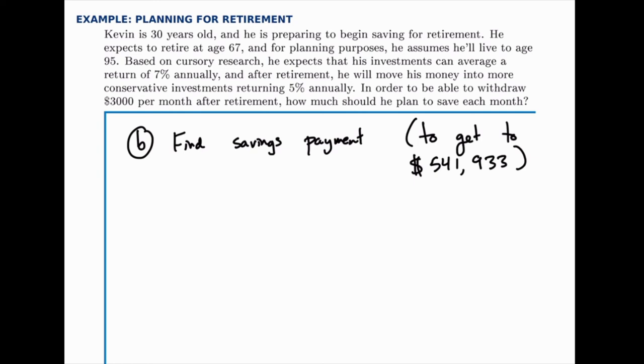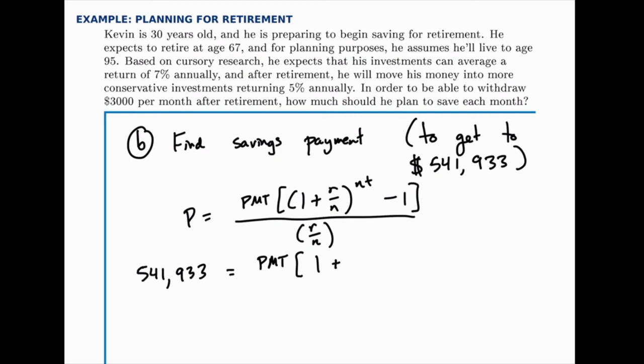So the savings annuity formula will fill in here, and now we can start filling in pieces. So P, the value he needs to save to, is $541,933. PMT is the unknown piece that we'll solve for. R, during the time of saving, he expects to get 7% on his investments, so that'll be 0.07.